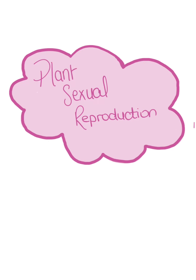Sexual reproduction involves two parents. Each parent typically produces sex cells called gametes. This video will look at the process of gamete formation in plants.